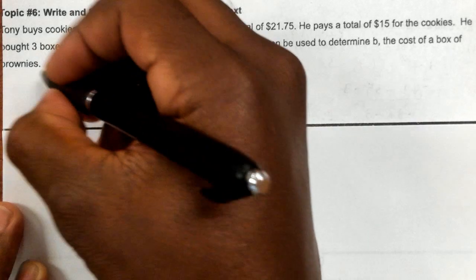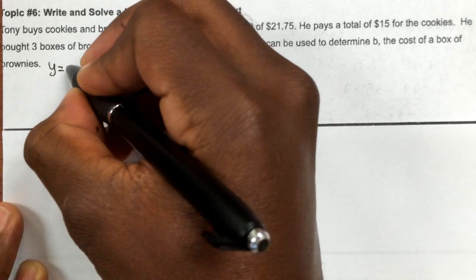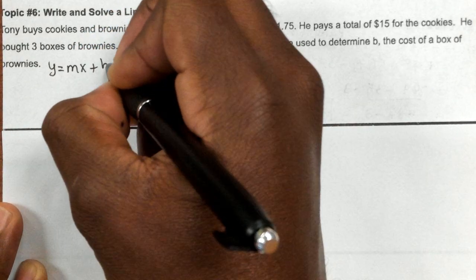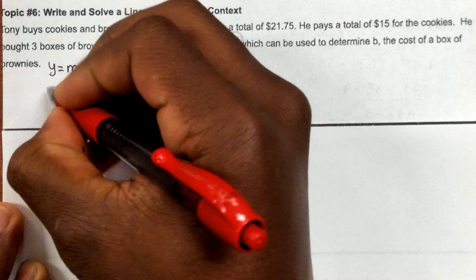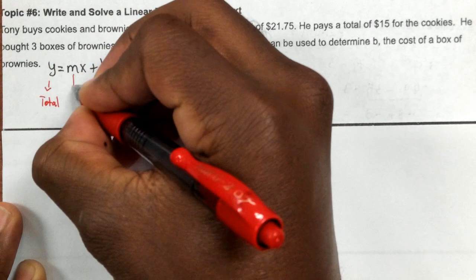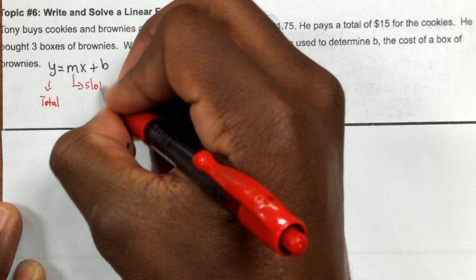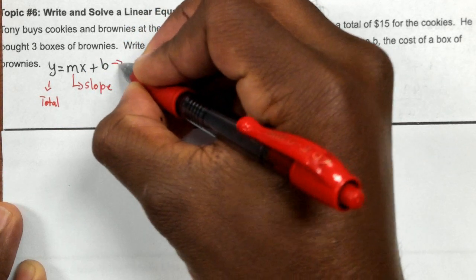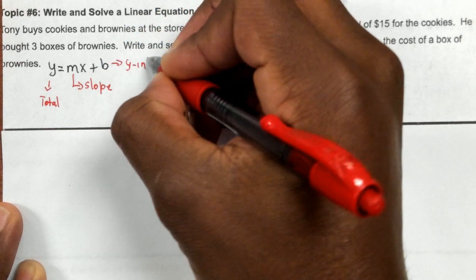You need to think about y equals mx plus b, where we know that y represents your total, m represents your slope, and b is your y-intercept.